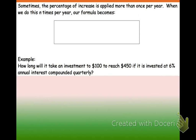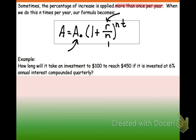Looking at the next problem. So sometimes the percentage of increase is applied more than once per year. So this is that next formula, where it's A equals our initial amount A₀ times 1 plus our rate r divided by n, all raised to the nt. So we have our initial amount, we have our rate, the number of compounds n, and the time t.